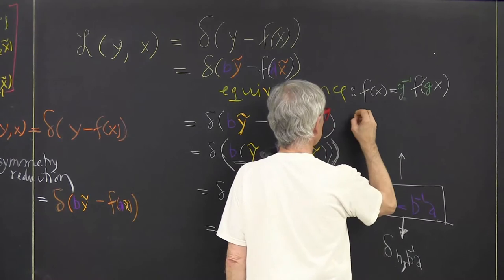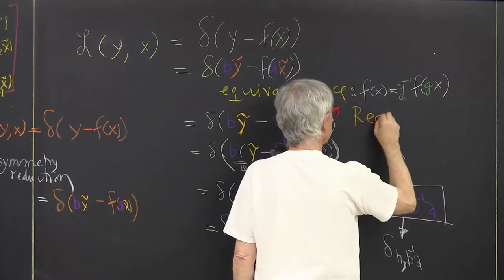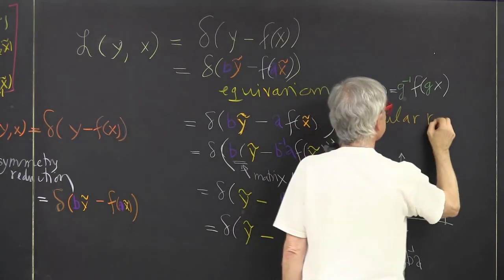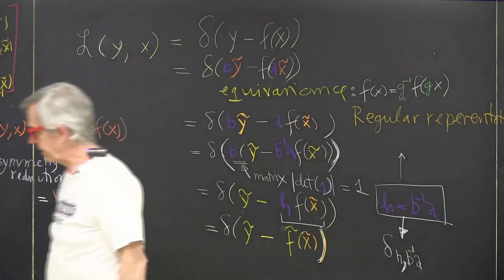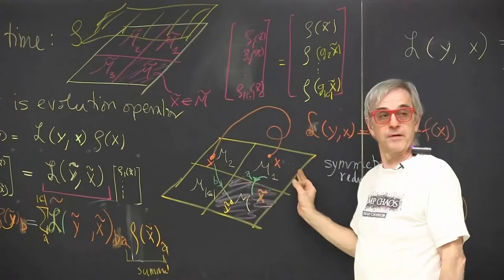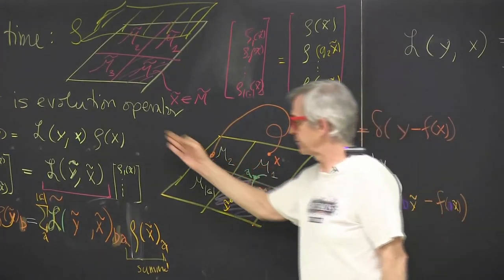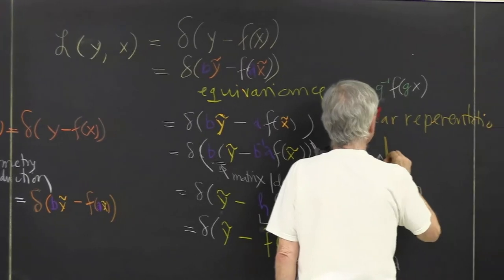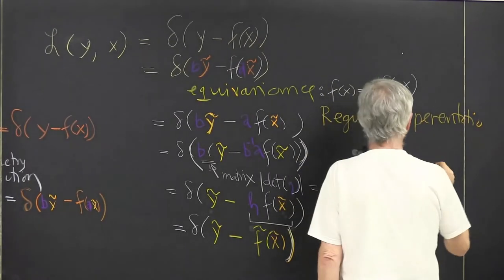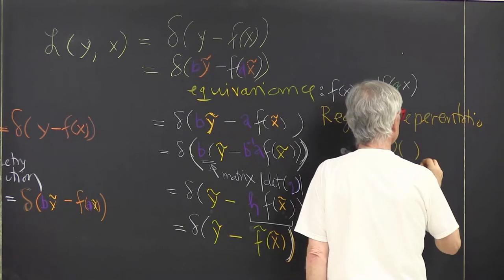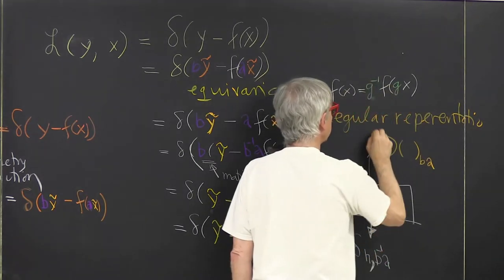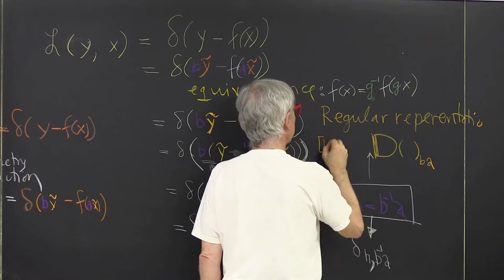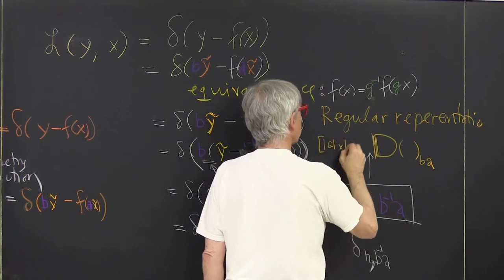And this thing has a name in theory of finite groups—it's called regular representation. So it has to be in this case a 4 by 4 matrix because there are 4 elements, and in general it has to be a matrix whose size is the order of the group. So it's a matrix, it has to have two indices b and a. So this is size of the group order cross order of the group matrix.